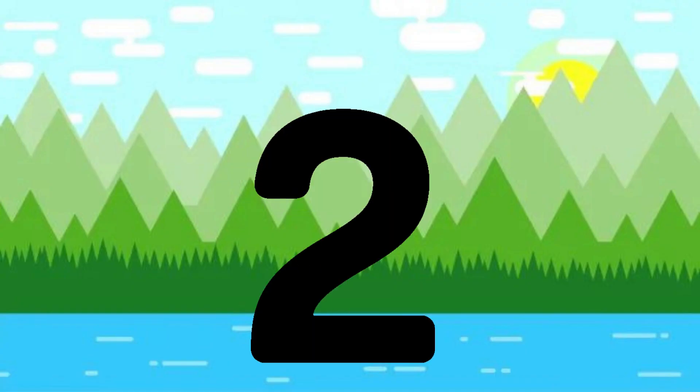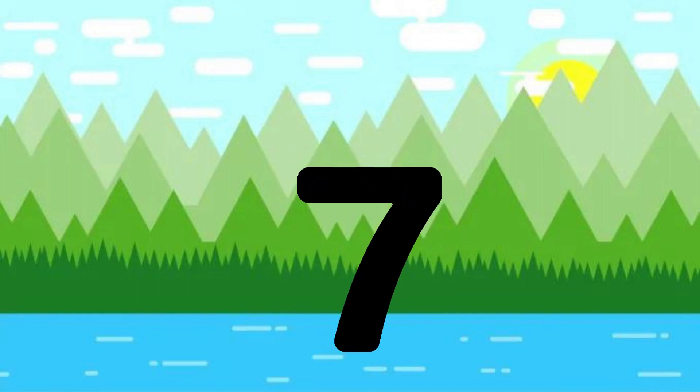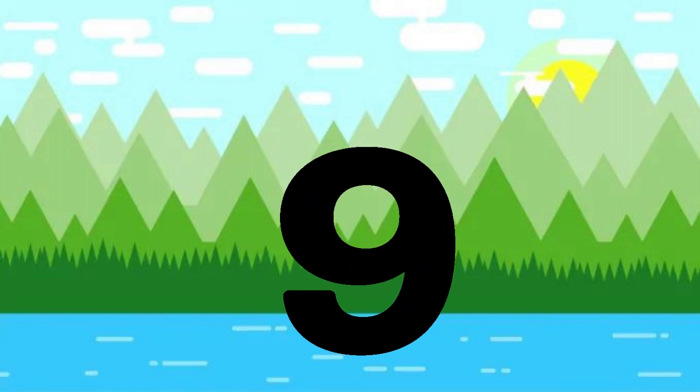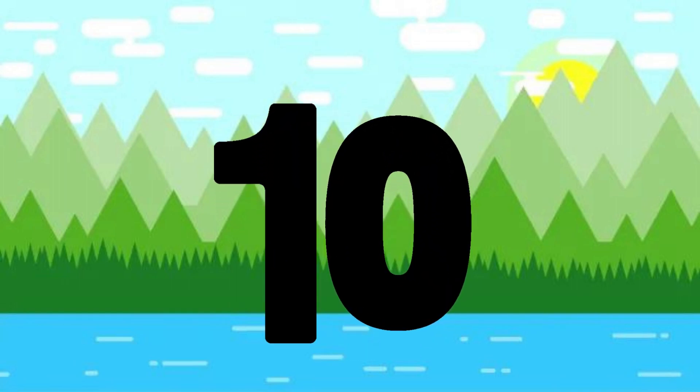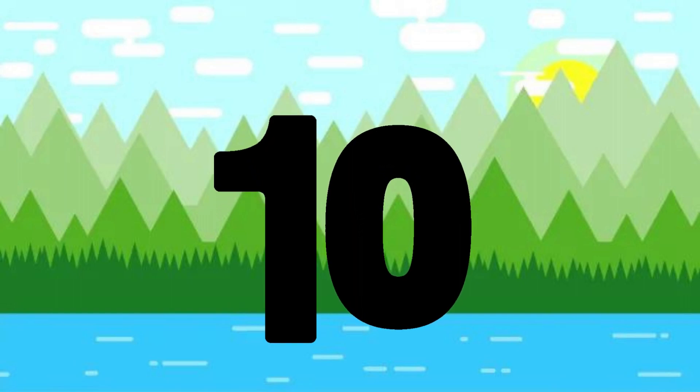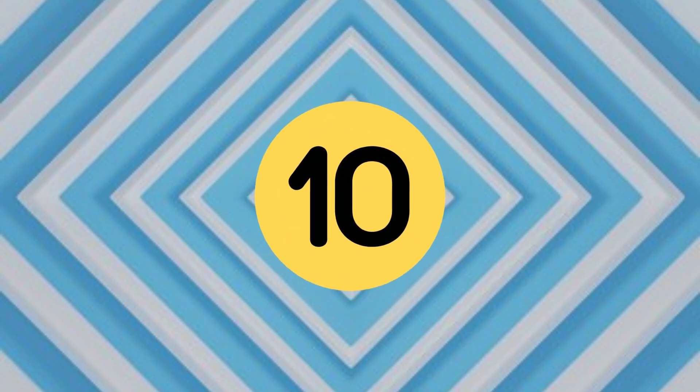One little, two little, three little numbers. Four little, five little, six little numbers. Seven little, eight little, nine little numbers. Ten little numbers.